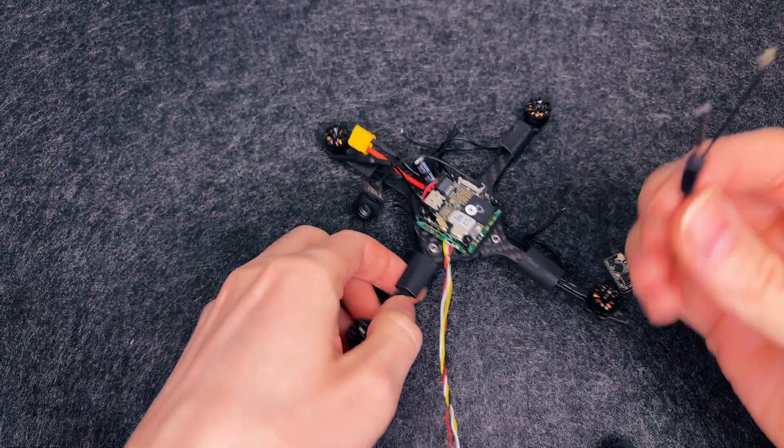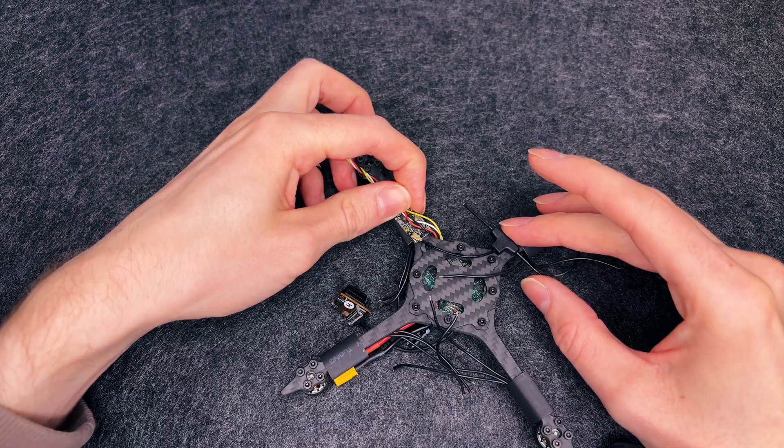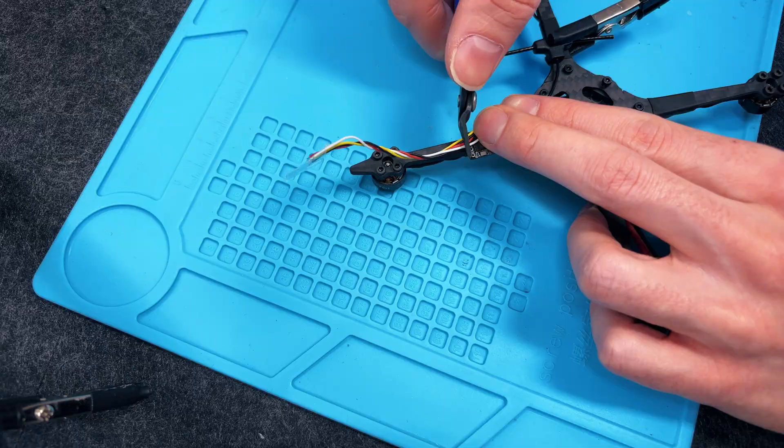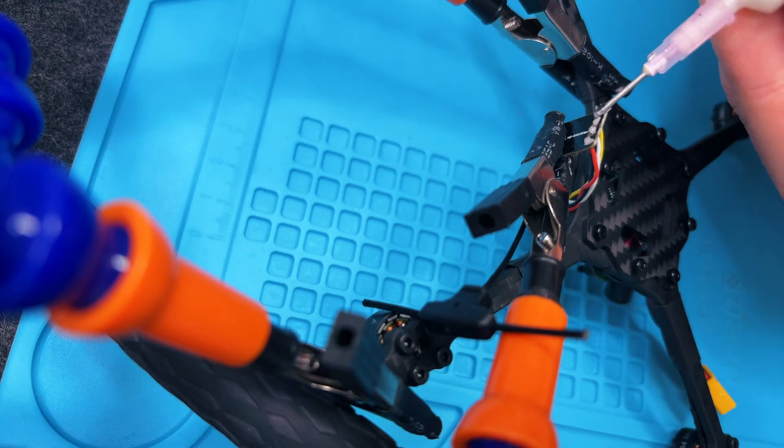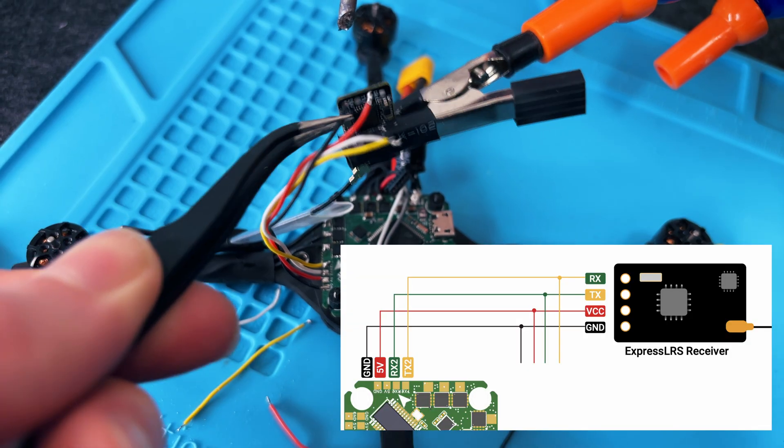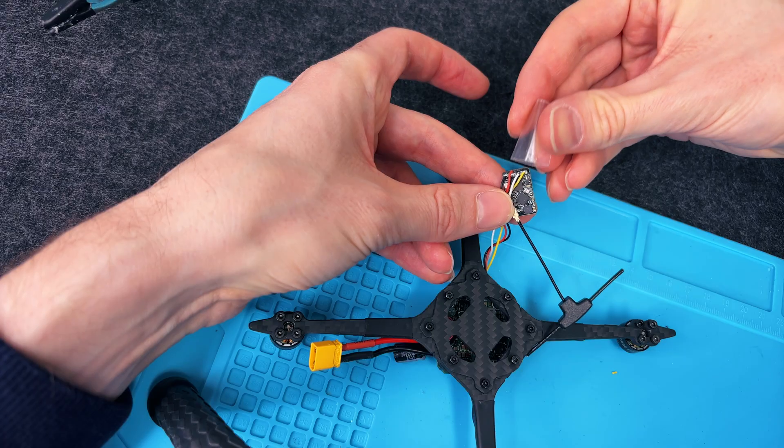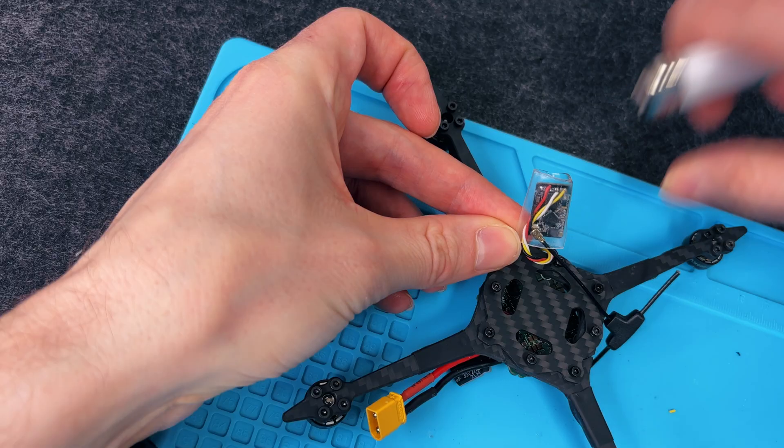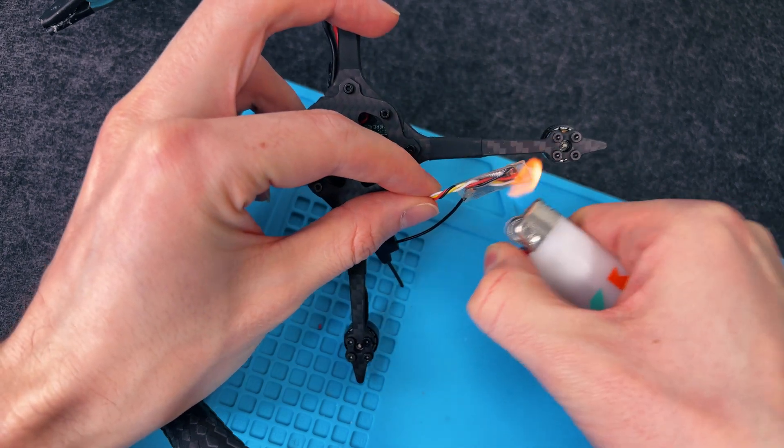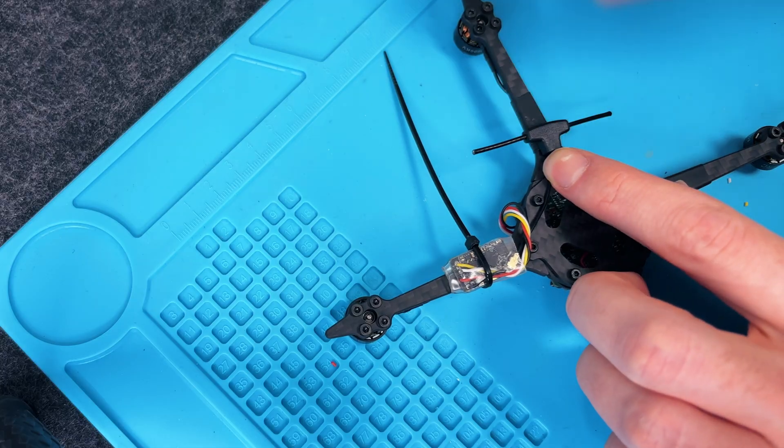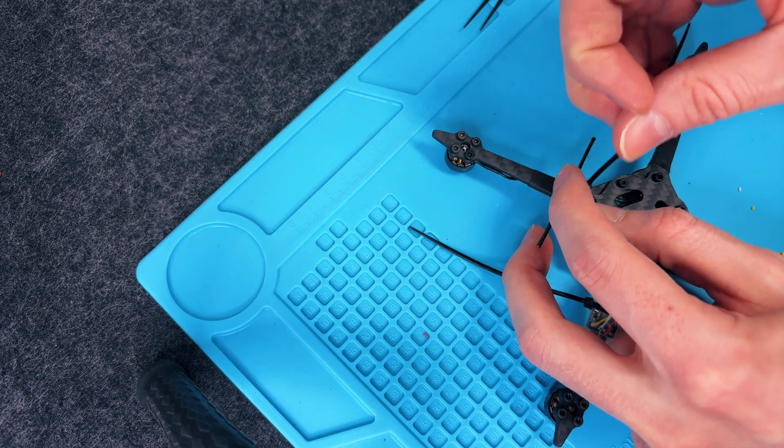Now, the receiver. This one's new to me. It's from DFR, a 2.4GHz ExpressLRS receiver. I've never tested it before, so I'm curious to see how it performs. Wiring it up is simple. Just connect TX to RX and RX to TX. If you get this wrong, your radio won't connect. Placing it under the flight controller is not an option, because the battery strap gets in the way. Instead, we attach it to an arm and keep the antenna on a separate one for the best signal.